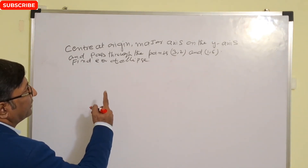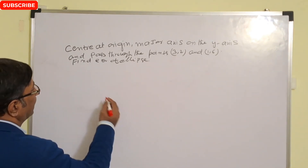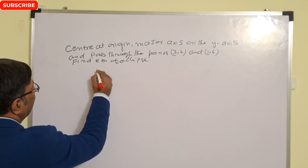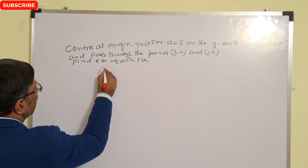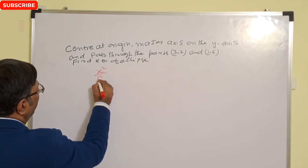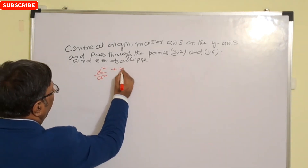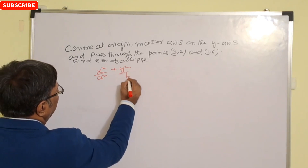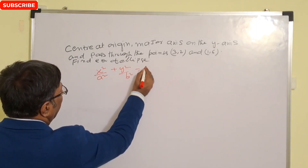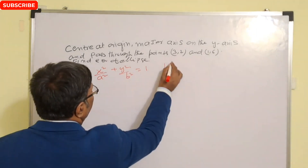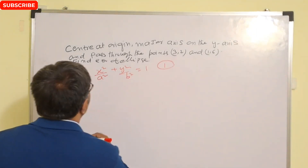Since the center is at the origin and the major axis is on the y-axis, our equation will be x² / a² + y² / b² = 1. This is the first equation.